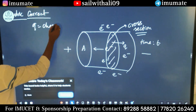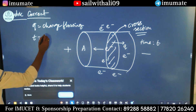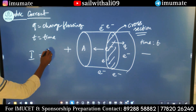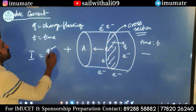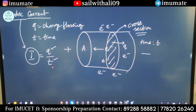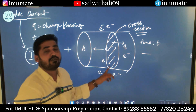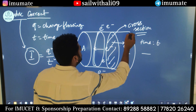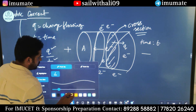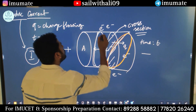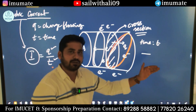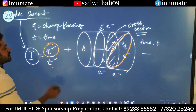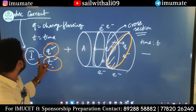Let's say Q amount of charge is passing through this cross-section area in time T. Q is the charge flowing, T is the time for those charges to cross that cross-section. Then the current would be given by total charge divided by time — when you divide total charge by time, you get electric current. Now this electric current is independent of the shape of the cross-section. The amount of charge flowing per unit time through any cross-section of the conductor is independent of the shape. So if you calculate the charge flowing through any cross-section and divide by the time of flow, you simply get the electric current I.